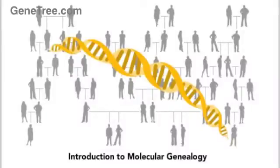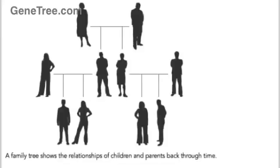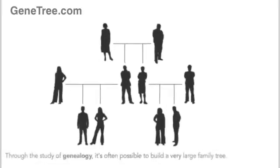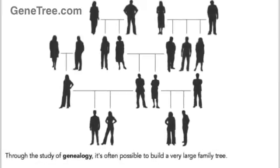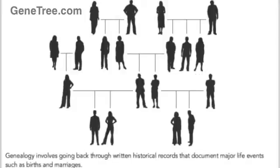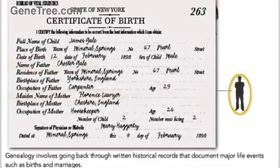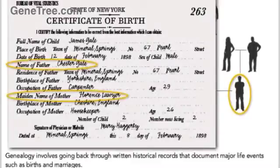Introduction to Molecular Genealogy. A family tree shows the relationships of children and parents back through time. Through the study of genealogy, it's often possible to build a very large family tree. Genealogy involves going back through written historical records that document major life events, such as births and marriages.